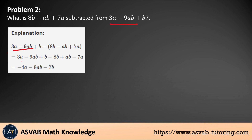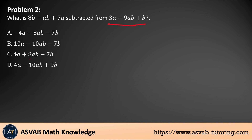Then combine like terms. Remember: if you have the same sign in front, you add; if you have different signs, you subtract from big to small and keep the sign of the bigger number. So 7a minus 3a gives 4a. Then 9ab and ab gives 8ab. And b minus 8b gives negative 7b. The final answer is 4a minus 8ab minus 7b.